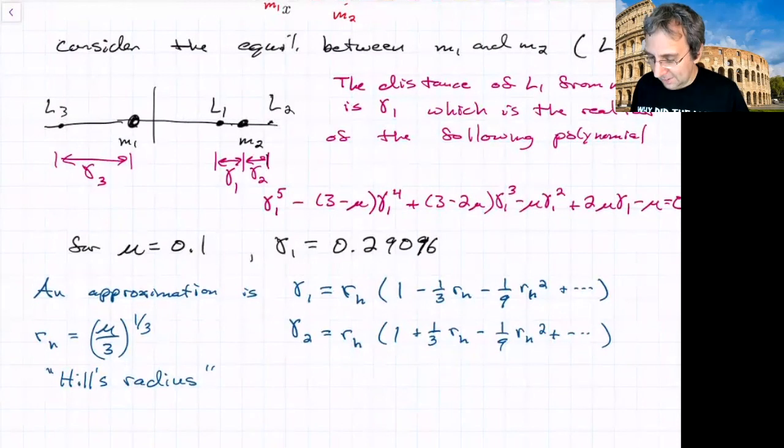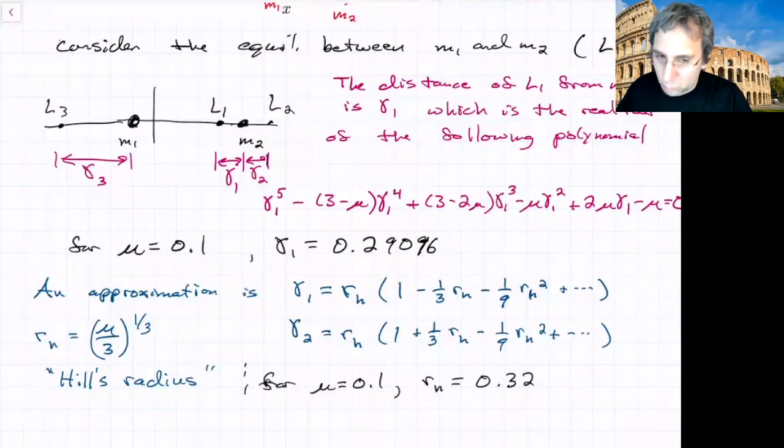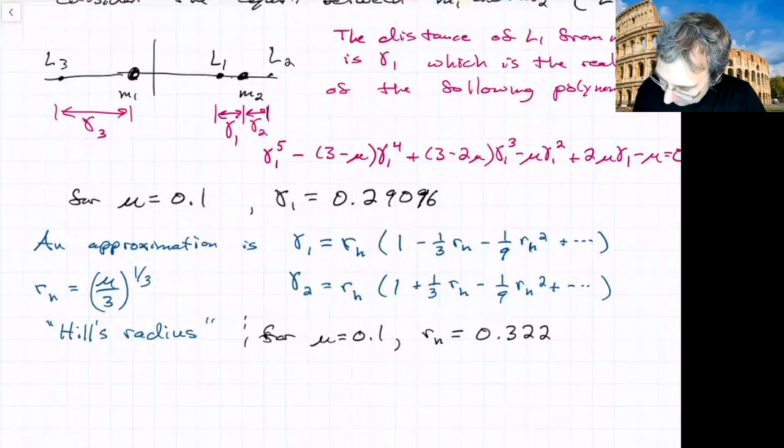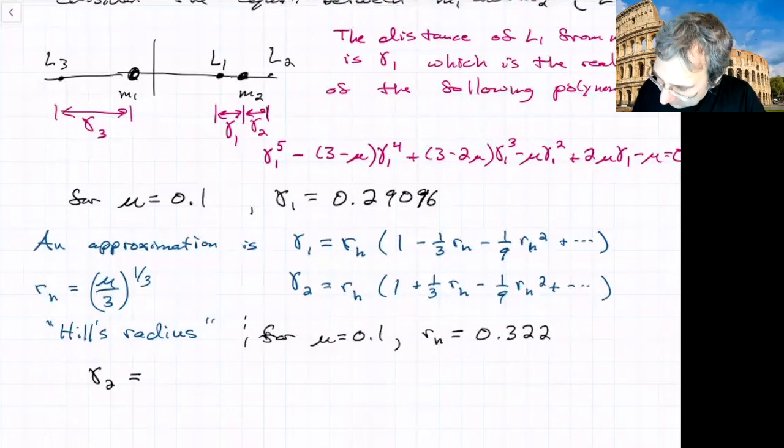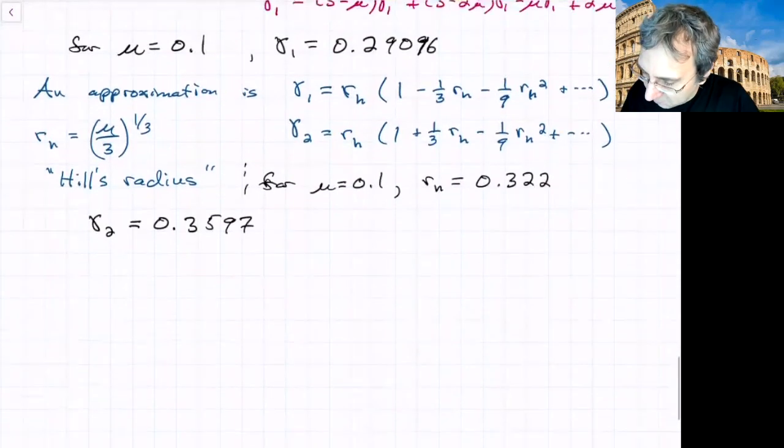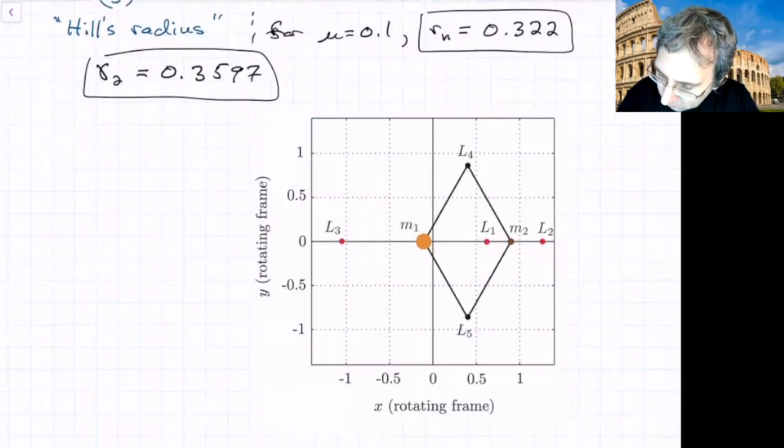For mu of 0.1, the Hill's radius is 0.322, so it's kind of close. If we added up the entire series expansion, we keep getting closer. For smaller values of mu, this is a better approximation. If I calculate gamma 2, it turns out to be 0.3597. The distance to L1 will be less than R_H, but the distance to L2 will be greater than R_H.